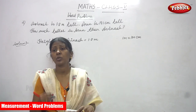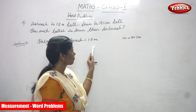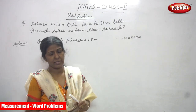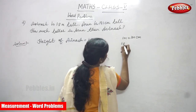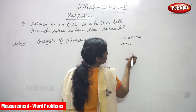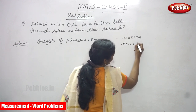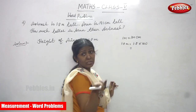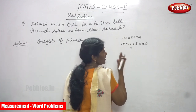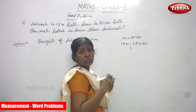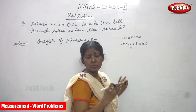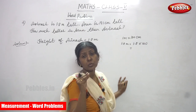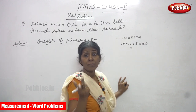This is meters. 1 meter is equal to 100 centimeters. You have to convert the bigger unit to the smaller unit — that means multiplication. So 1.8 meters is converted into centimeters: 1.8 into 100. Meter is a bigger unit, centimeter is a smaller unit. If you convert bigger unit into smaller unit, you have to multiply according to the value.